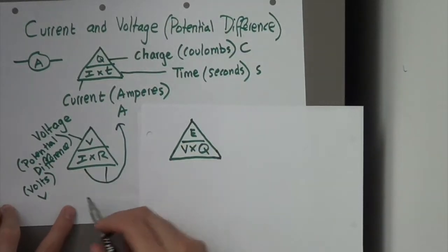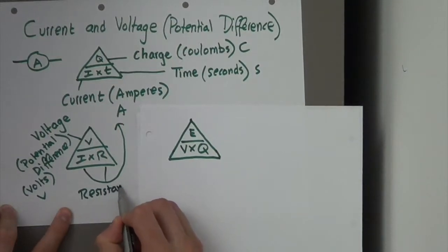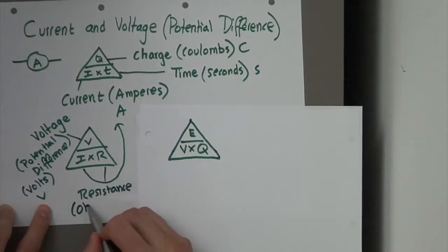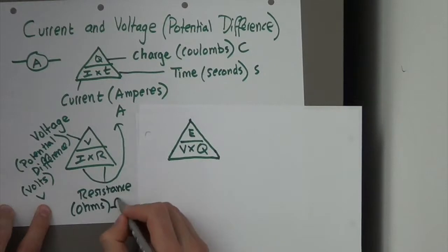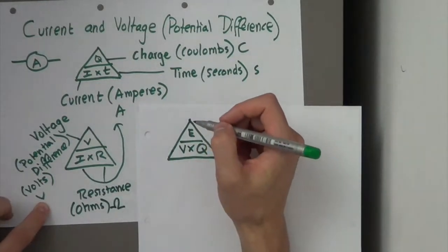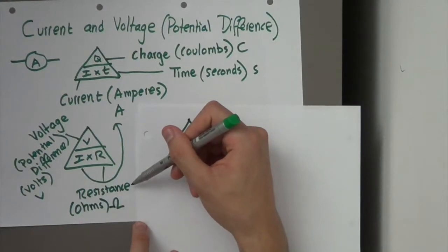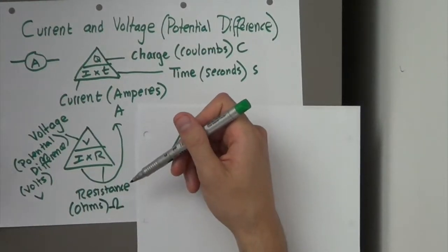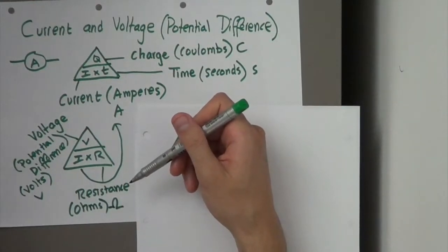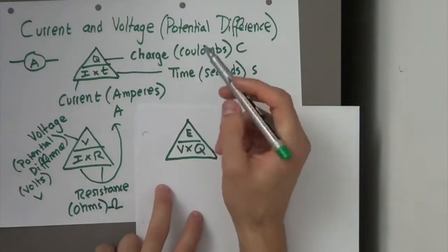R is resistance, its units are ohms, and that's the symbol there, omega. In a later video, we'll be looking at what resistance is, but for now, resistance is that which opposes current. The flow of electrons.